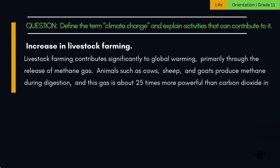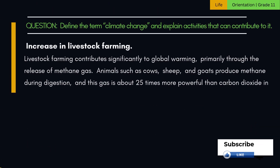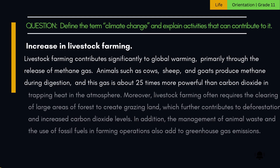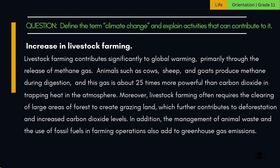3. Increase in livestock farming. Livestock farming contributes significantly to global warming, primarily through the release of methane gas. Animals such as cows, sheep, and goats produce methane during digestion, and this gas is about 25 times more powerful than carbon dioxide in trapping heat in the atmosphere.